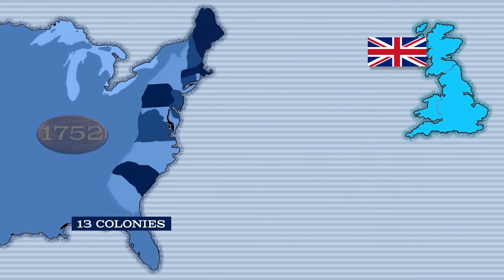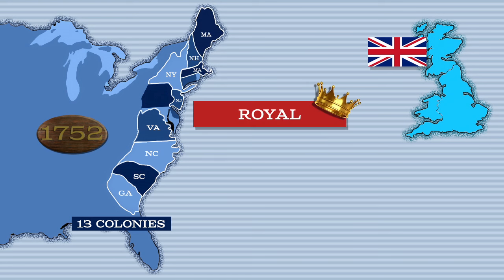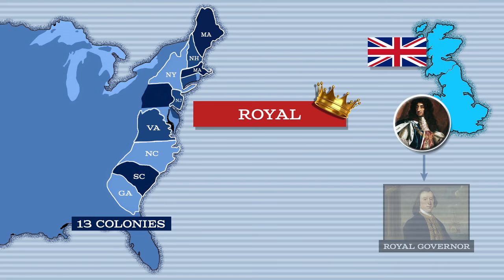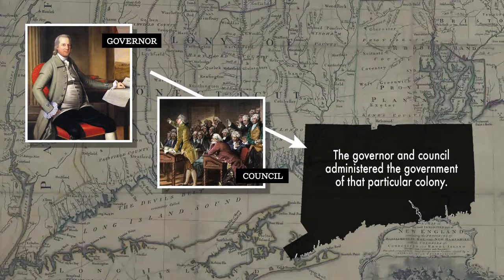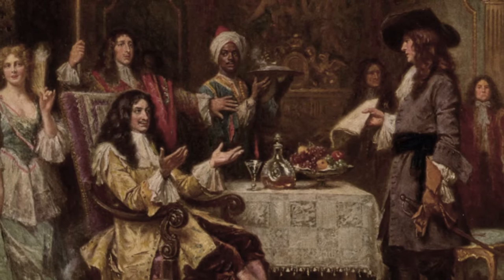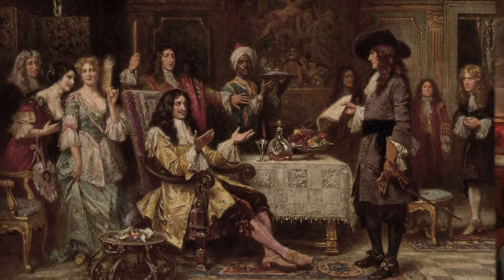By 1752, the colonies of Georgia, South Carolina, North Carolina, Virginia, New Jersey, New York, Massachusetts, and New Hampshire were royal or crown colonies. In a royal colony, the ruling monarch of England appointed a royal governor and council. The governor and council administered the government of that particular colony, and the king's government had direct control and authority over the royal colonies.